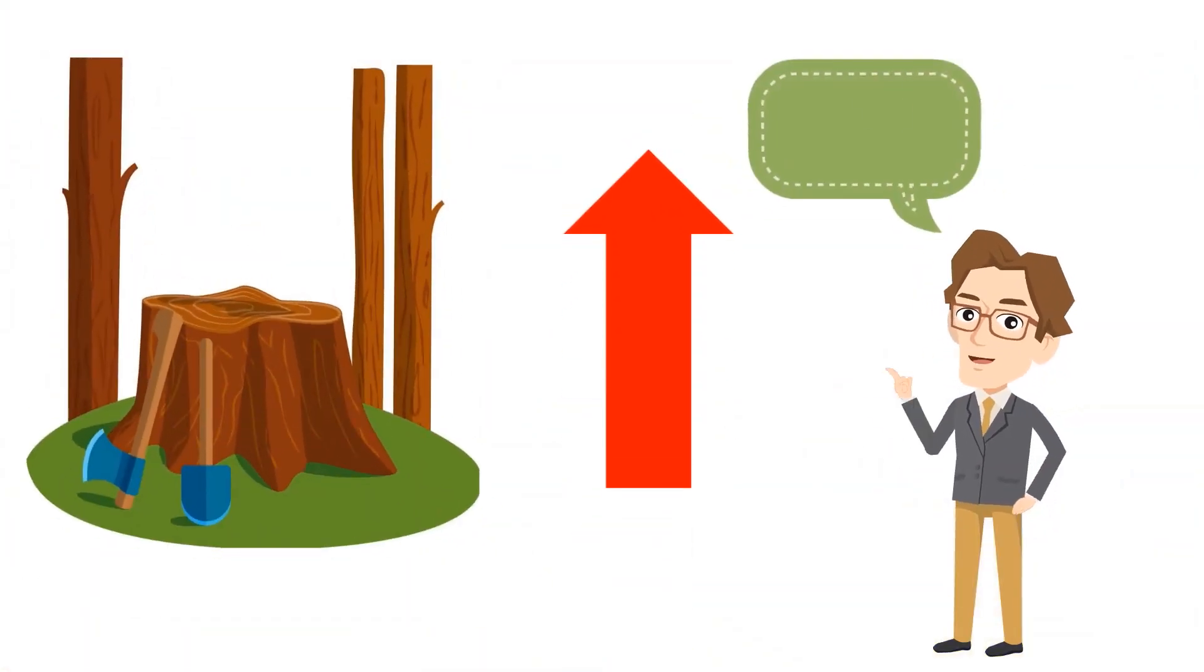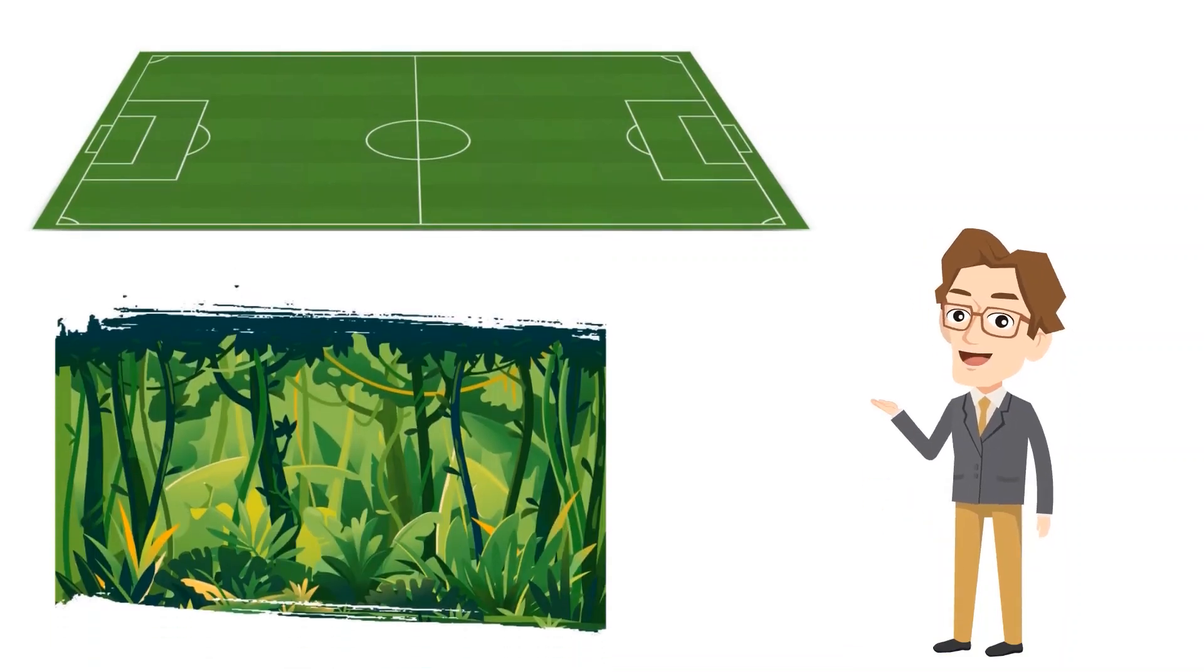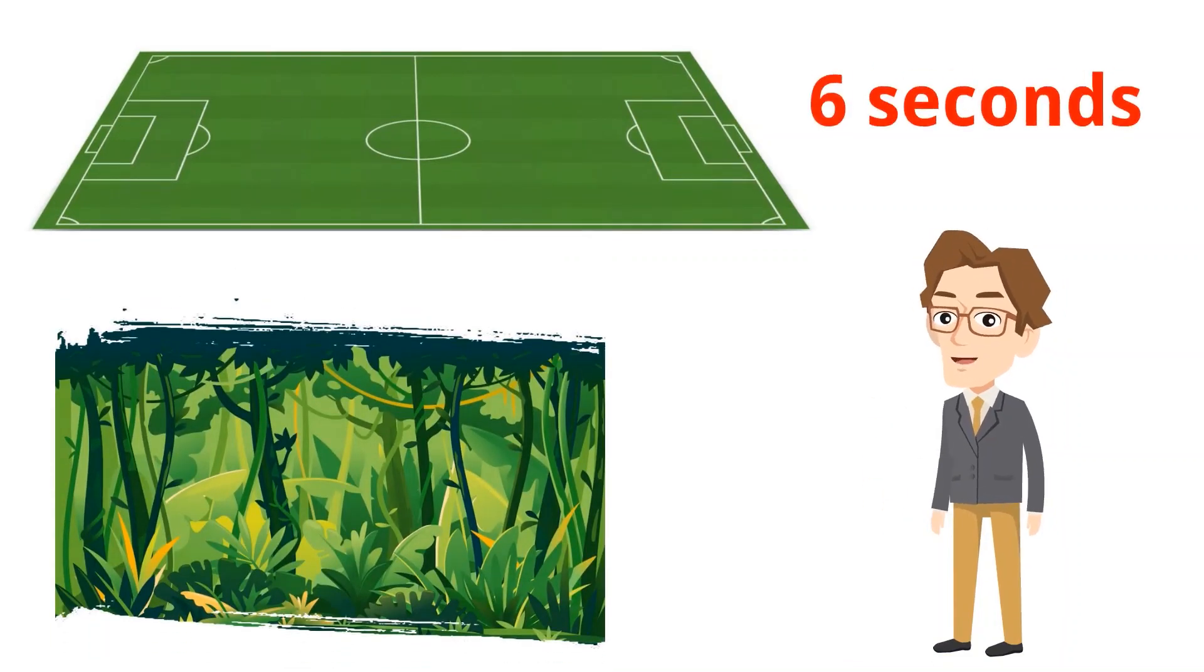Reports show that deforestation climbed by 3% in 2019, with the planet losing a soccer field-sized chunk of tropical forest every six seconds.